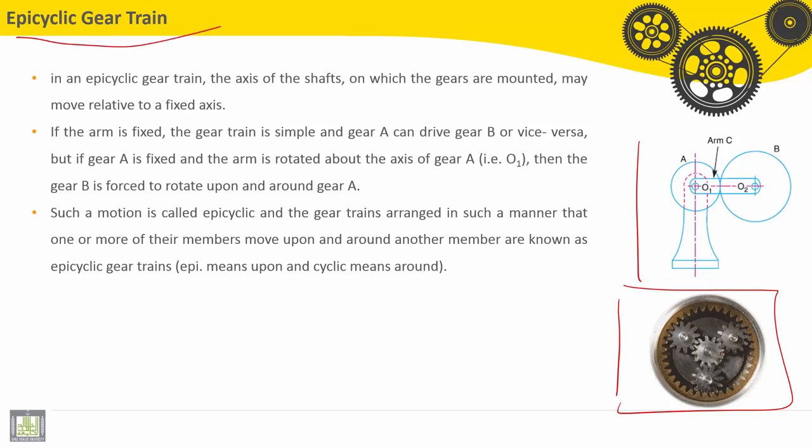I will present here some features about an epicyclic gear train. In an epicyclic gear train, the axis of the shaft on which the gears are mounted may move relative to a fixed axis. We can see here this axis is moving, rotating around the main axis.